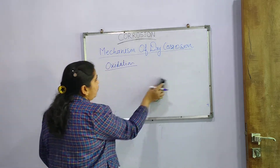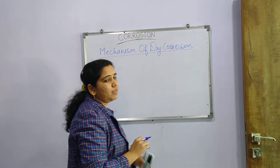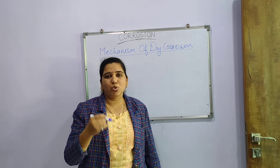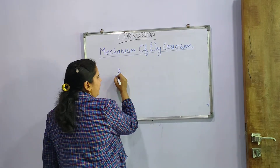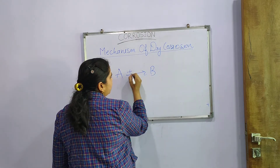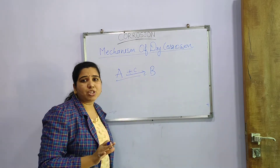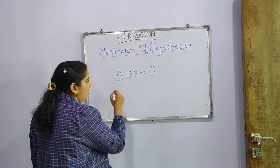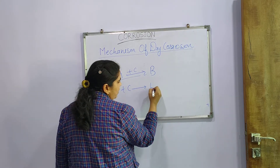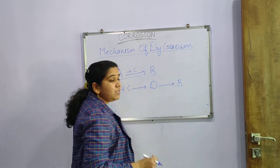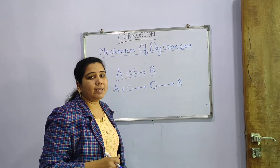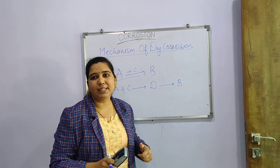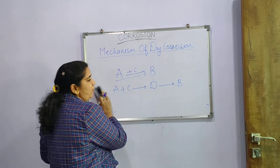Now we will see the mechanism. The word mechanism means whenever a single reaction occurs, it is not in a single step. For example, A forms B — but first A plus C gives D, and then D gives B. In this way, there is a path of reaction, and when we see it stepwise, it is called a mechanism. Like that, we have to see the mechanism of dry corrosion.